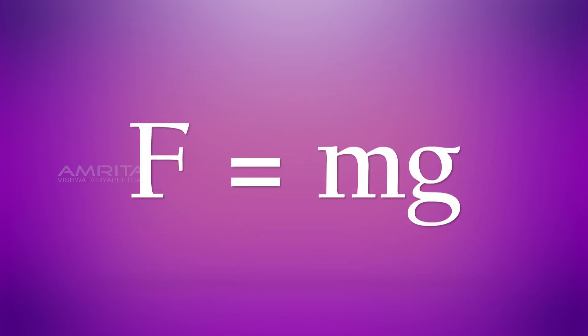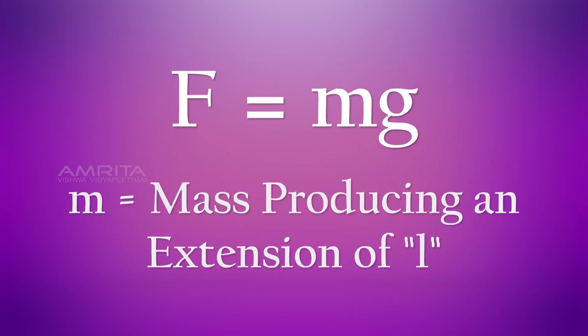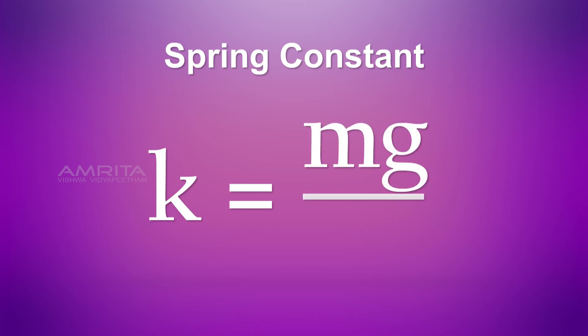But F is equal to MG, where M is the mass producing an extension of L. That is, the spring constant K is equal to MG by L.